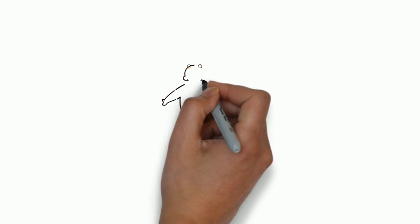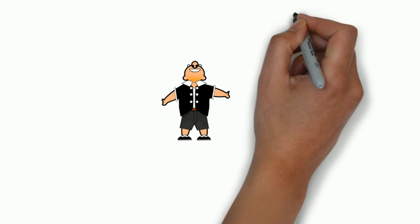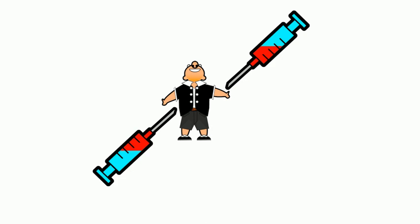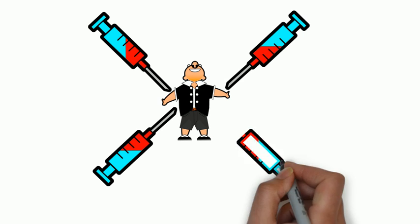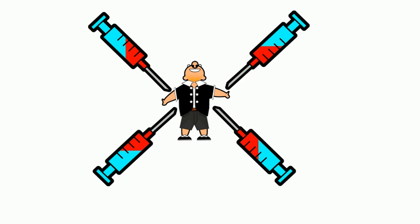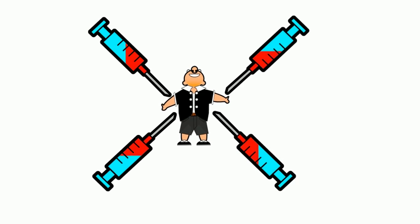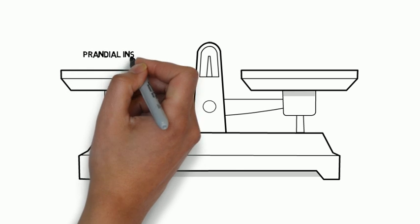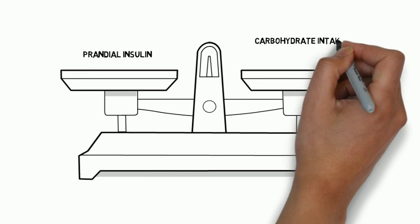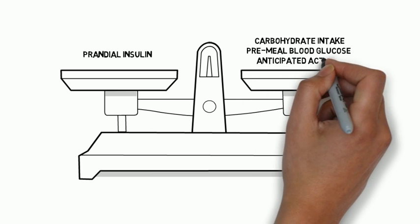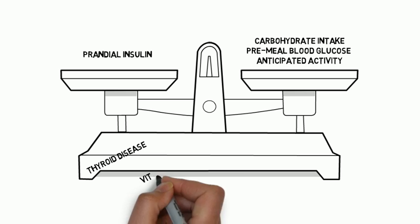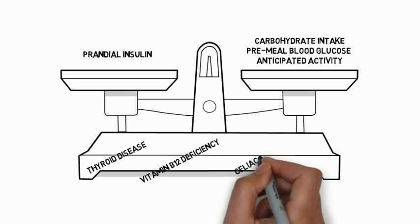For type 1 diabetes, most people should be treated with multi-dose insulin injections — up to 3 to 4 injections per day of basal and prandial insulin. Some may be treated with a continuous subcutaneous insulin infusion. Education should include matching prandial insulin to carbohydrate intake, pre-meal blood glucose, and anticipated activity. Screen type 1 patients for other autoimmune diseases such as thyroid disease, vitamin B12 deficiency, and celiac disease as appropriate.